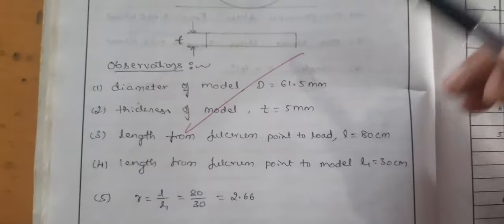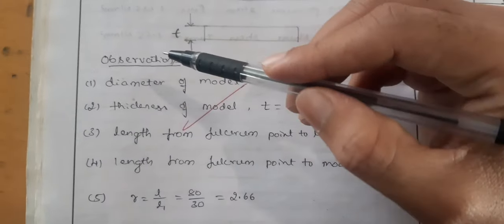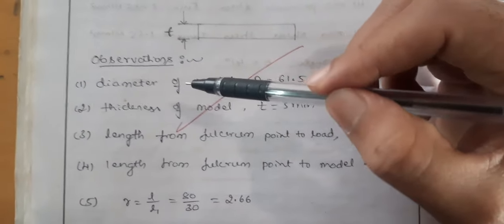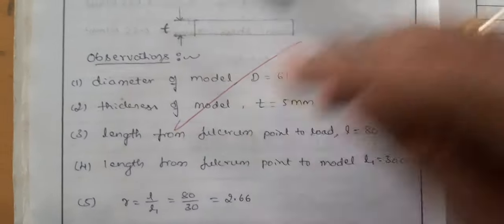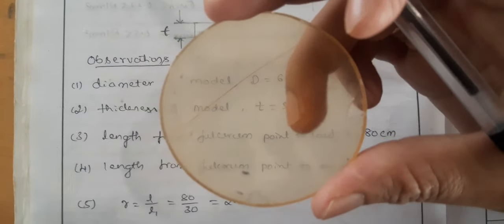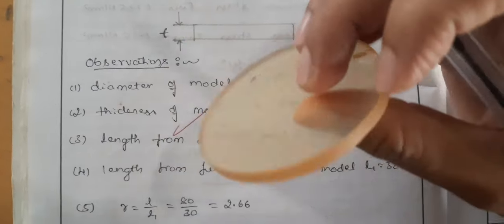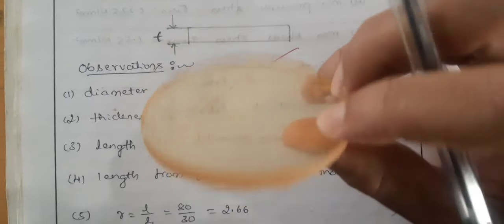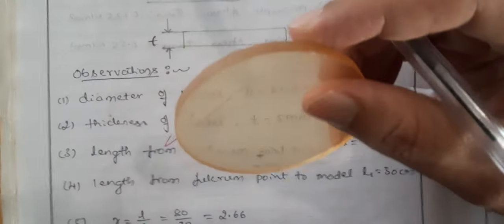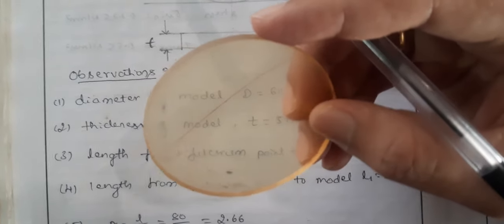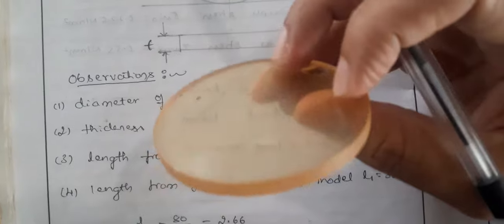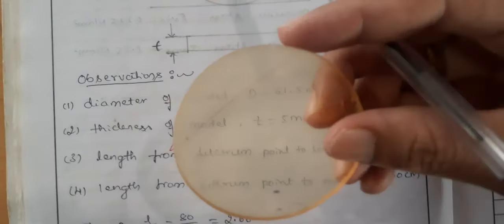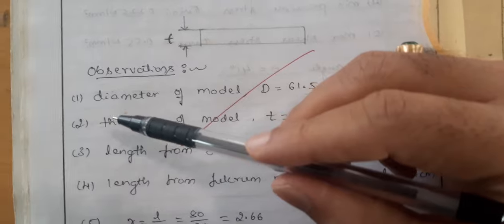For this experiment we have to note some observations. First, I am going to show you the specimen or model which we are going to use for the experiment. This is a material made up of resin and epoxy — that is the photoelastic material — used for different applications like medical applications and more. It has a specific diameter, and you have to take down that reading.